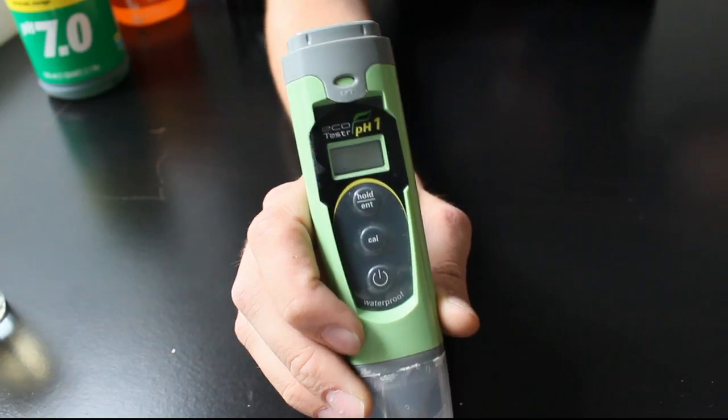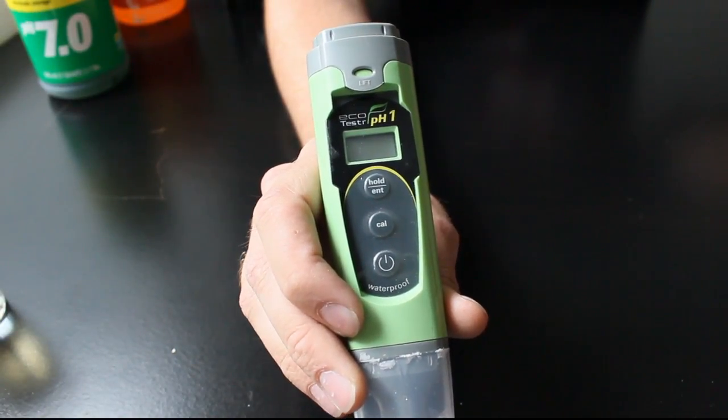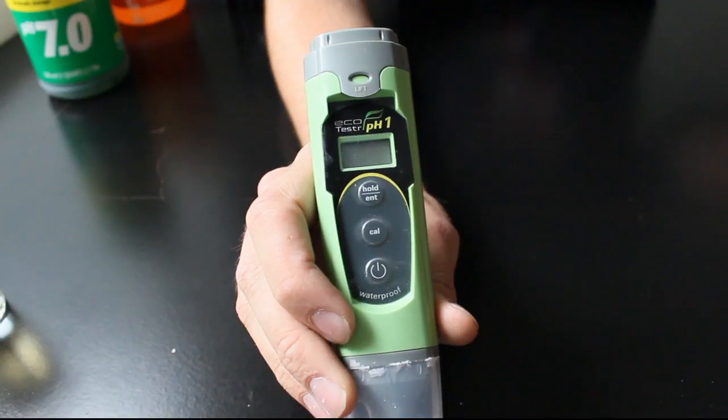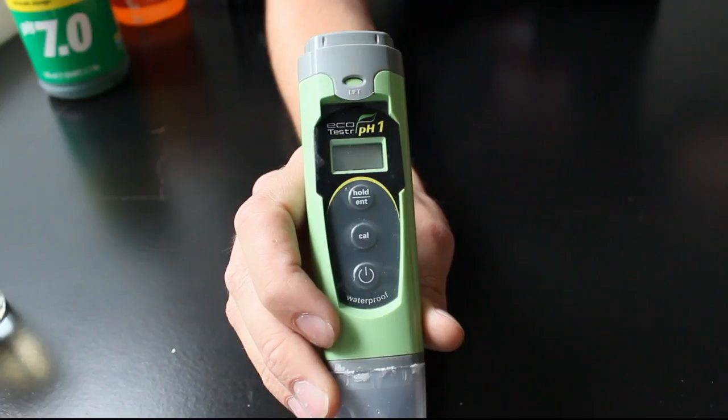I'm also using the General Hydroponics pH up and pH down. This is our pH pen. I'm going to demonstrate how to calibrate one of these. Now this is easy, it's all electronic, which given the price point it should be, and it's very simple to calibrate.